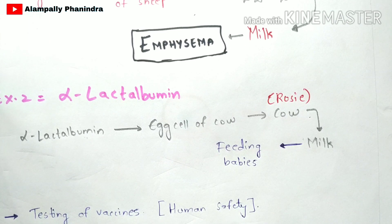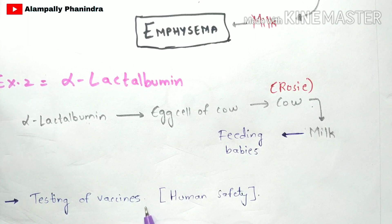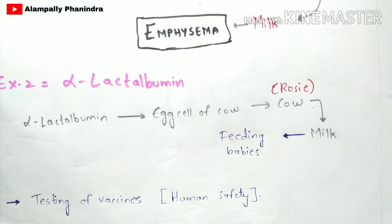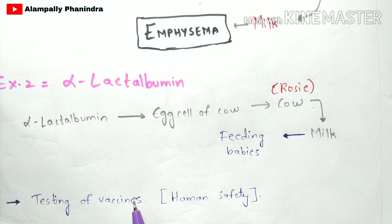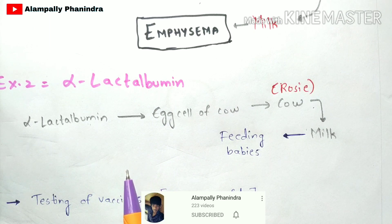One of the most important uses of animal transgenesis is the testing of vaccines for human safety. For example, when a virus spreads worldwide and a vaccine is discovered, that vaccine is first tested in animals — such as mice and rabbits — using the animal transgenesis process. Only after the vaccine shows successful results in animals is it supplied to the market for human consumption.